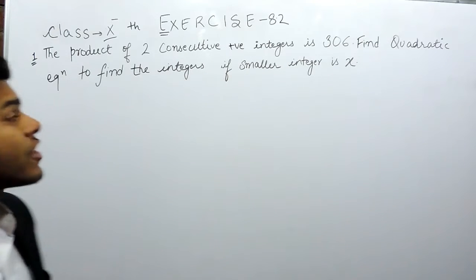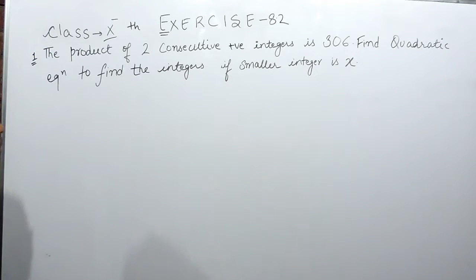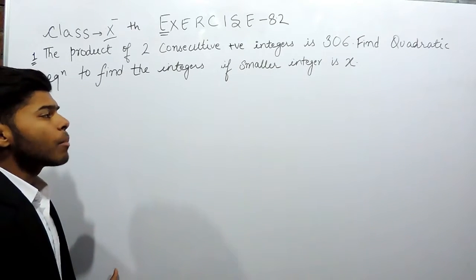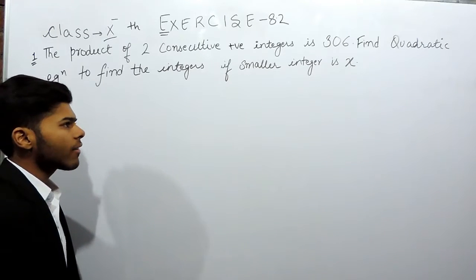Hello everyone, this is the first question of Exercise 8.2 of R.D. Sharma. The first question says that the product of two consecutive positive integers is 306.